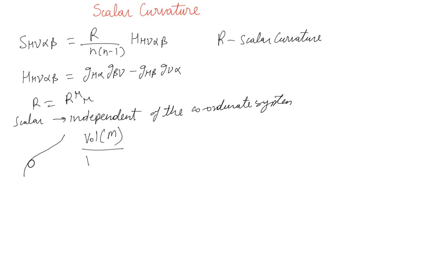Is given as 1 minus R/(6n+2) E², where E is the radius of the ball, a small radius.